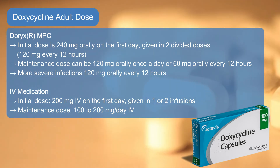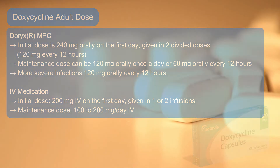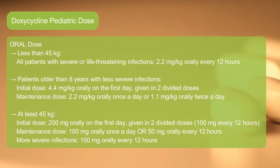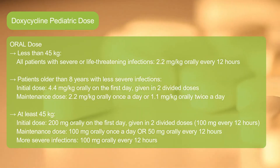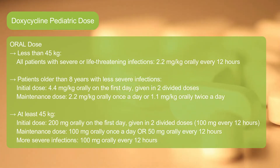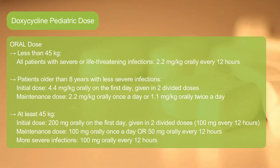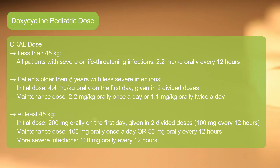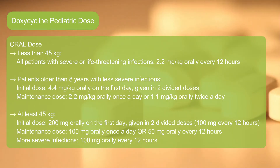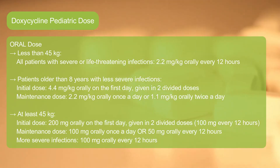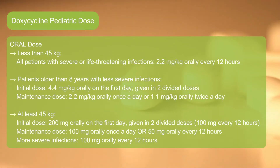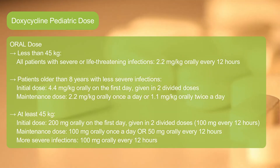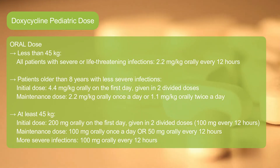Common Doxycycline pediatric dose — Oral dose, less than 45 kg: All patients with severe or life-threatening infections: 2.2 mg per kg orally every 12 hours. Patients older than 8 years with less severe infections — initial dose: 4.4 mg per kg orally on the first day, given in 2 divided doses. Maintenance dose: 2.2 mg per kg orally once a day, or 1.1 mg per kg orally twice a day.